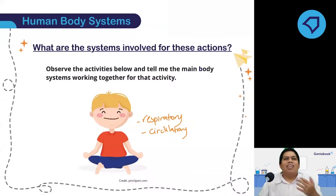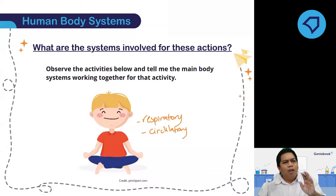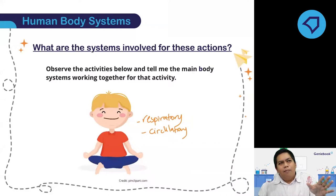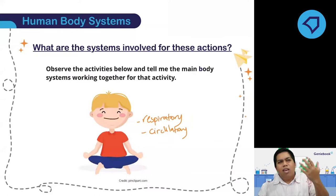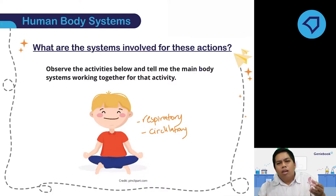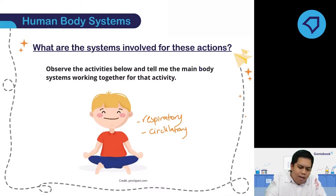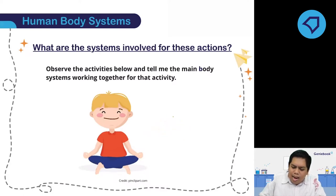Some of you mentioned the muscular system, but muscular is not really the main system for this activity. Because it's more about the exchange of gases — breathe in oxygen, all body parts get the oxygen, and then the body produces carbon dioxide and removes it. So we're talking about these two main systems: respiratory and circulatory.